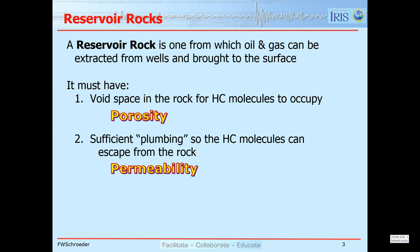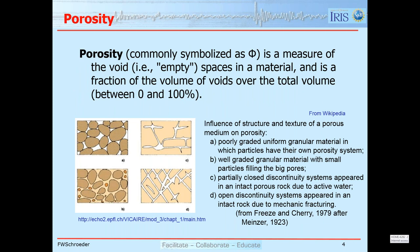Porosity is commonly symbolized by the Greek phi. It's a measure of the void or empty spaces in a material and it's a fraction of the volume of the voids over the total rock volume. The brown circles represent grains of sediment — say sand — and the white in between is the pore space where fluids collect. We can also have fracture porosity if the rocks are either naturally fractured or stimulated by man to frack the rocks and allow hydrocarbons to escape.